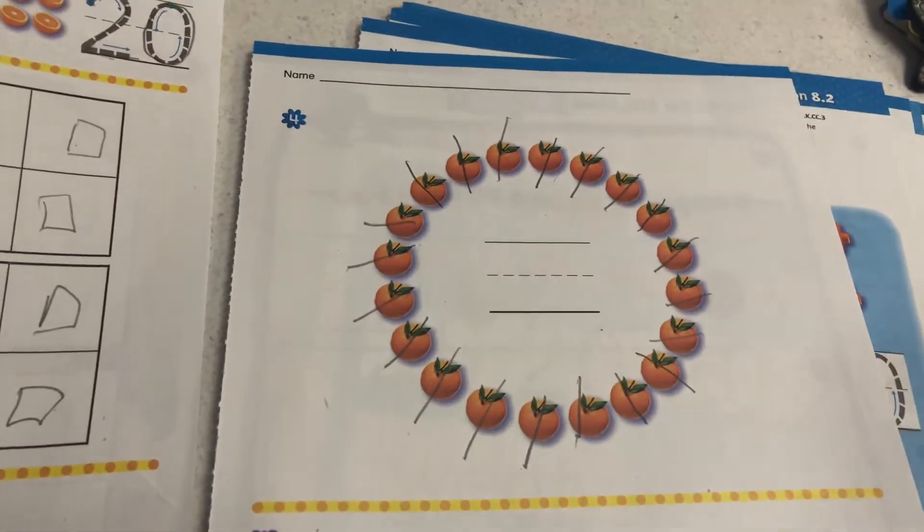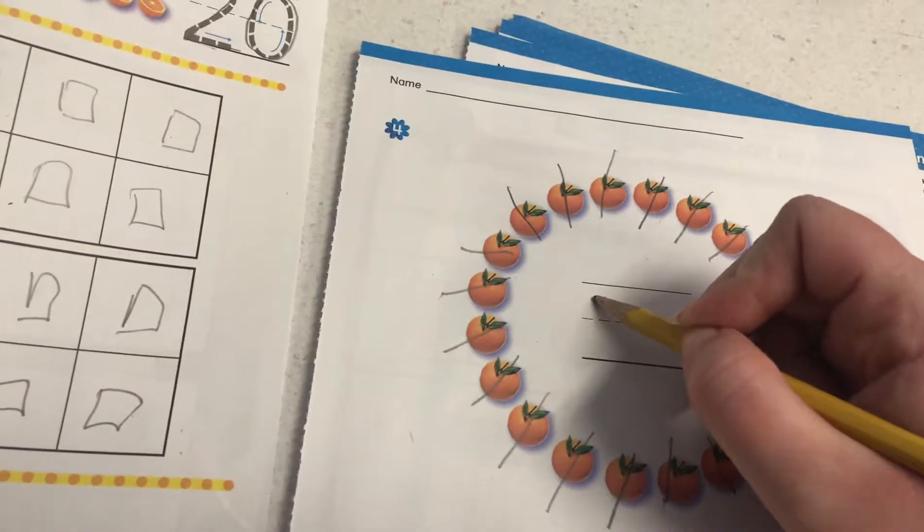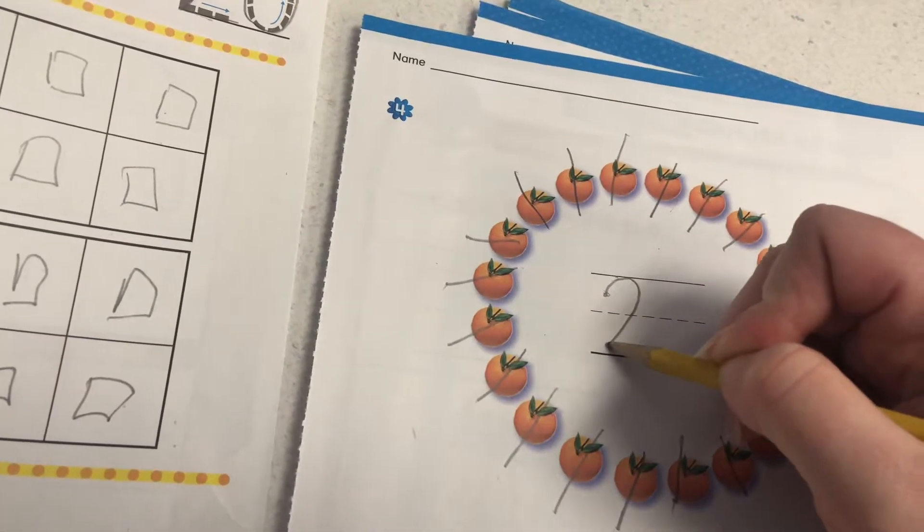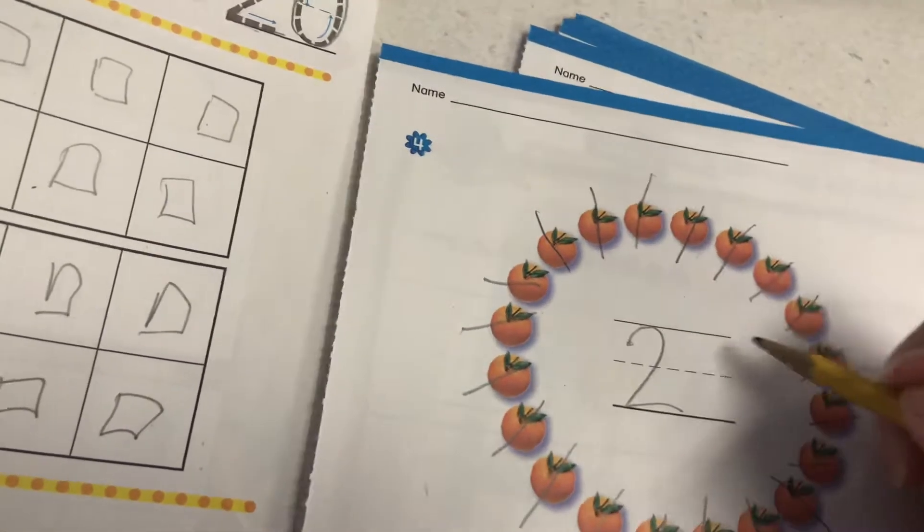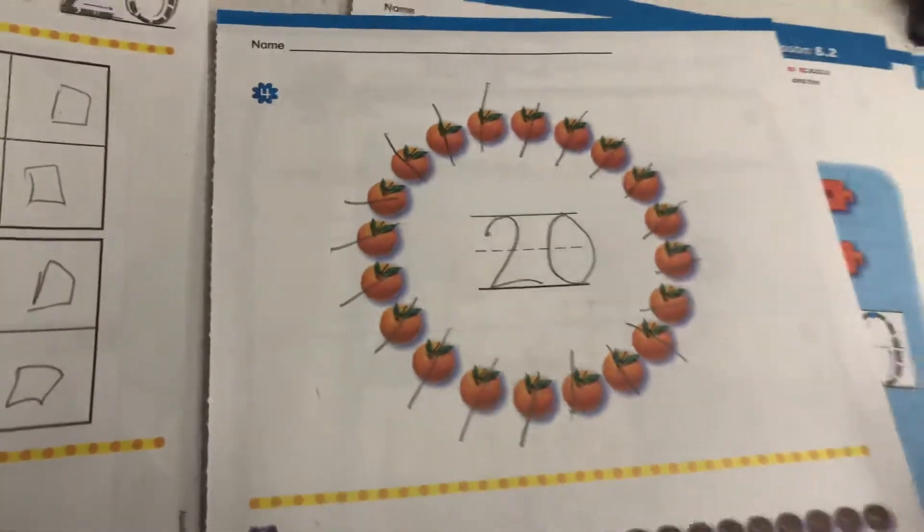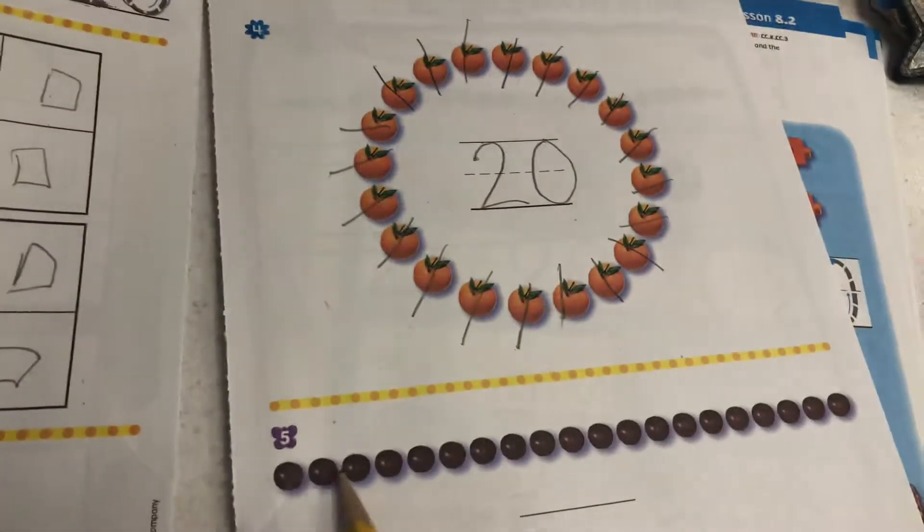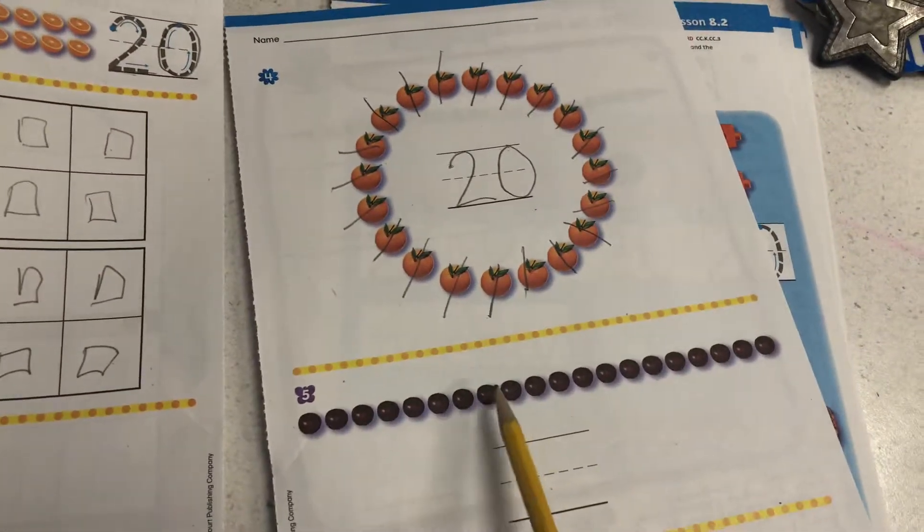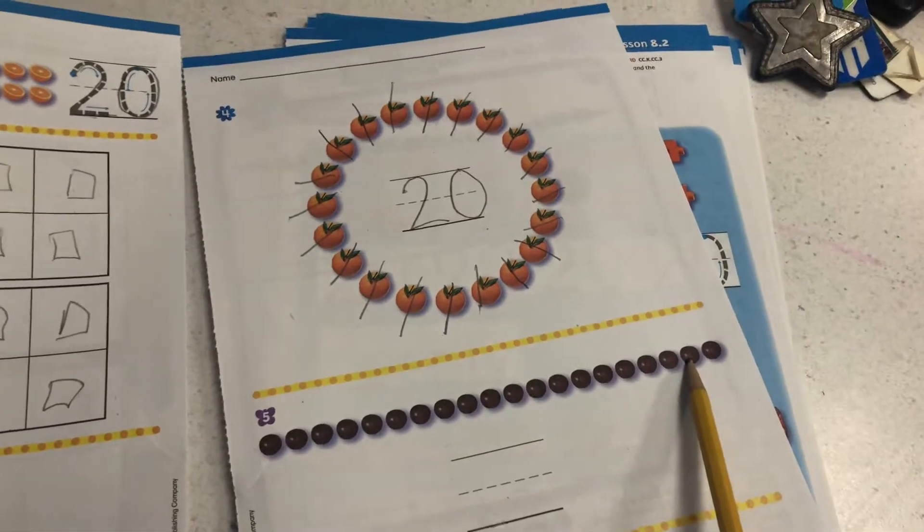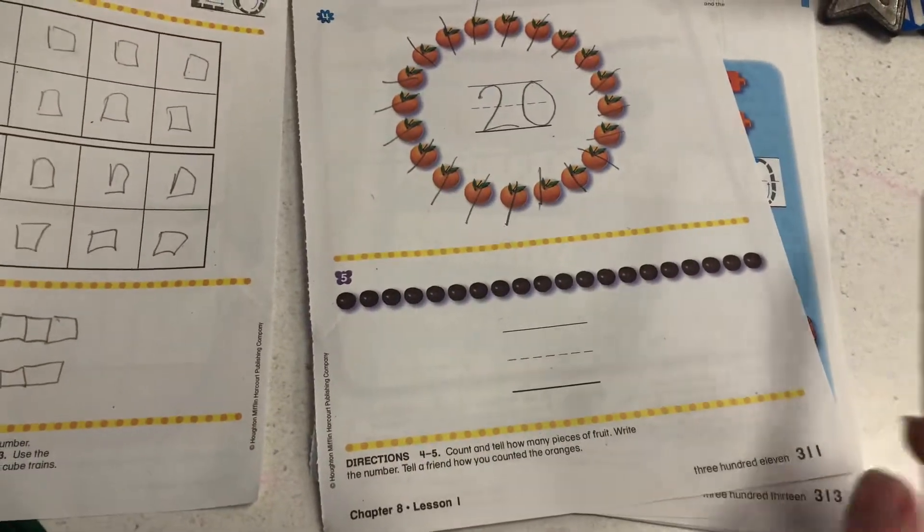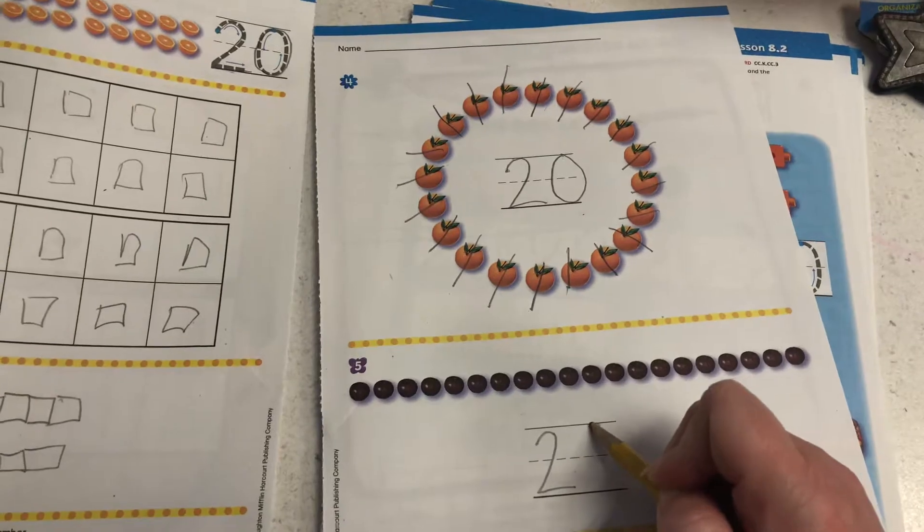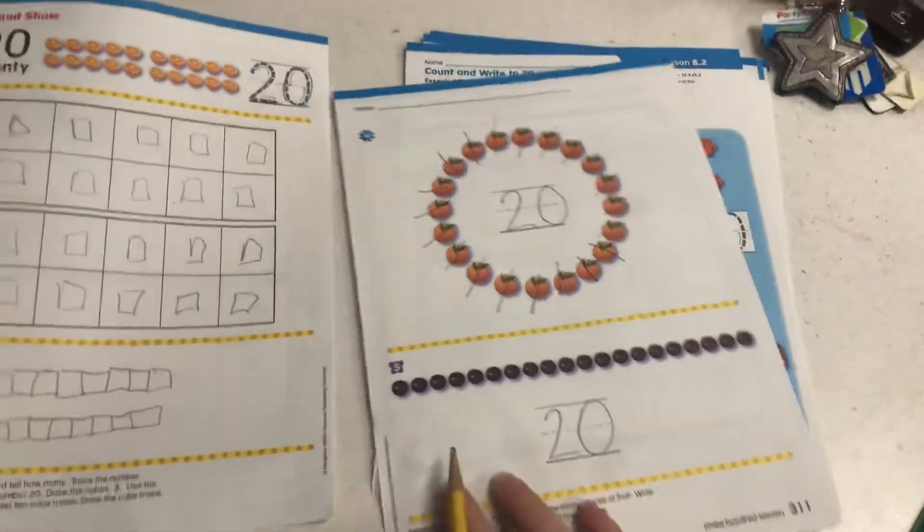So let's see if we remember how to make a 20 nice and neat. So I'm going to tuck my pencil right underneath this line here and go up towards the skyline, back down to the grass line and over. For my zero, I'm going to start right at the tippy top, come down and back around for a 20. All right, let's check these apples out. One, two, three, four, five, six, seven, eight, nine, 10, 11, 12, 13, 14, 15, 16, 17, 18, 19, and 20. Nice counting, guys. All right, here we go. Skyline down to the grass line and over. Skyline down and around. Okay, last part.